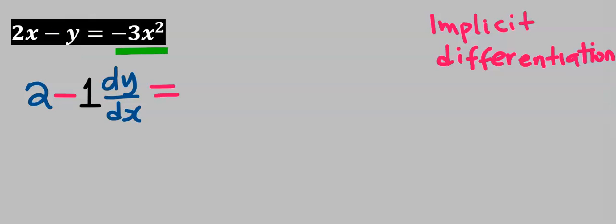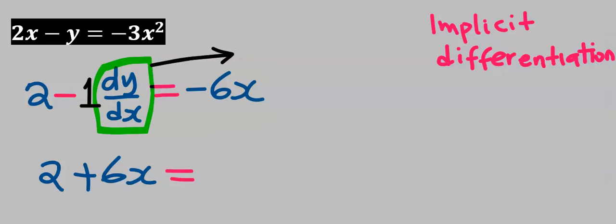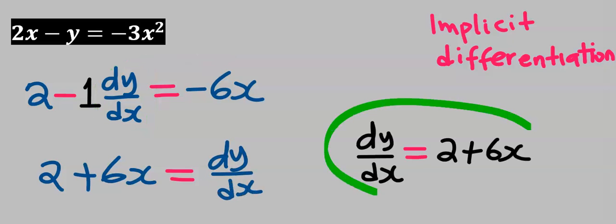Next, differentiate minus 3x squared and you're going to get minus 6x. Next, make dy/dx the subject. I'm going to leave the 2 here. Next, I will now move minus 6x across to the other side and it's going to be plus 6x. Next, I will take 1 dy/dx across to the other side and you can see we got back 2 plus 6x.